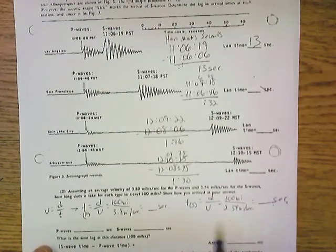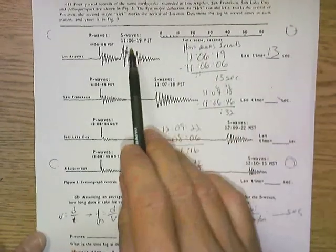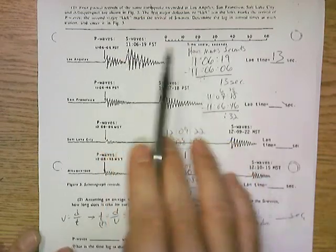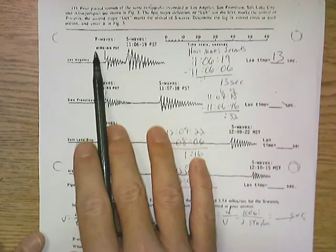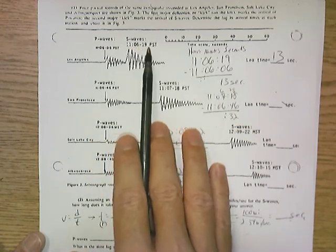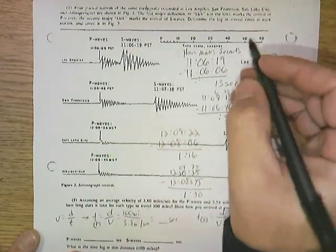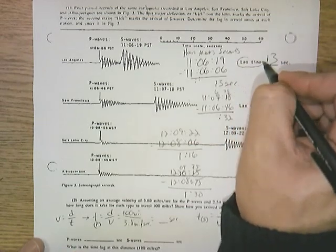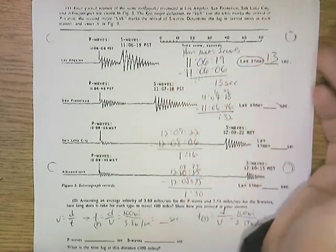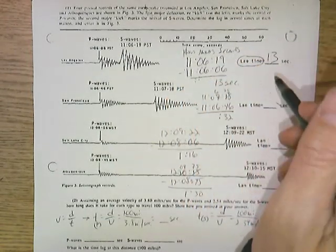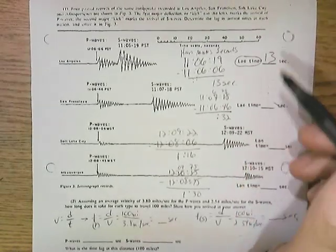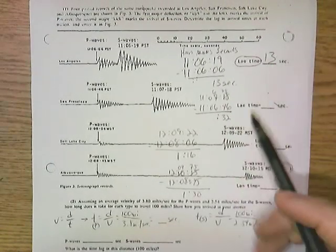Here's the data and we're subtracting times here. This is a seismograph reading that tells us that the primary waves arrived at 11:06:06 and the secondary waves, the S waves, arrived at 11:06:19. To find the lag time, which is the key piece for us to be able to find the distance away that the earthquake occurred or the distance to the epicenter, that's the point on land where the earthquake took place, though the focus is where the actual rock slippage took place.